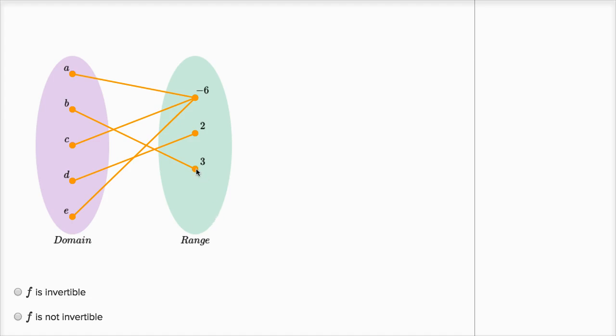So if you input three into this inverse function, it should give you B. If you input two into this inverse function, it should output D. If you input negative six into this hypothetical inverse function, what should it do? Well, you can't have a function that if you input a number, it could have three possible values, A, C, or E.